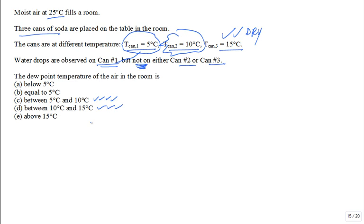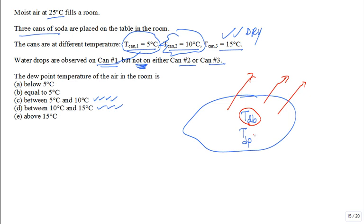The dew point temperature of the air in the room is, is it below 5? Is it equal to 5? Is it between 5 and 10? Is it between 10 and 15 or above 15 degrees C? We have a lot of votes for C. Do you like that one? Now, I modified the question a little bit. Dew drops are on the first can and the second can, but the third can is dry. What do we conclude about the dew point temperature of the air in the room? It's between 10 and 15. See what we did? So this new temperature is the dew point temperature. It's the dew point temperature of the air in the room. And we observe what happens when we bring cold surfaces into it, into the air in the room, like a cold surface of a can.